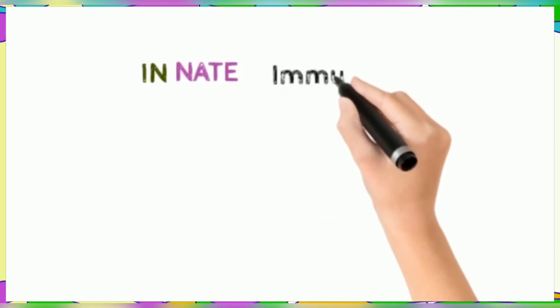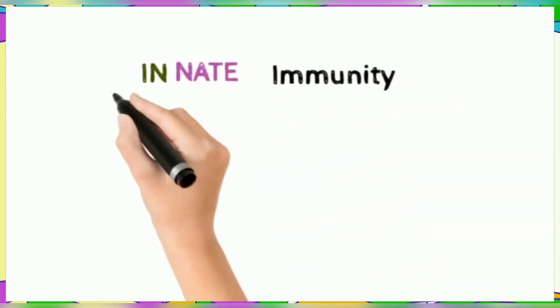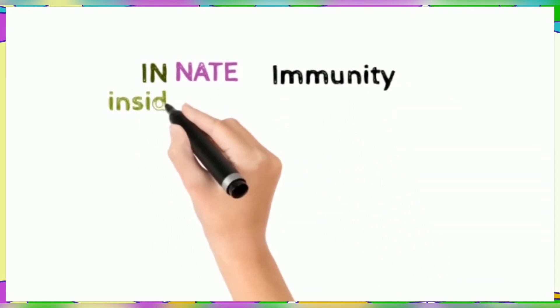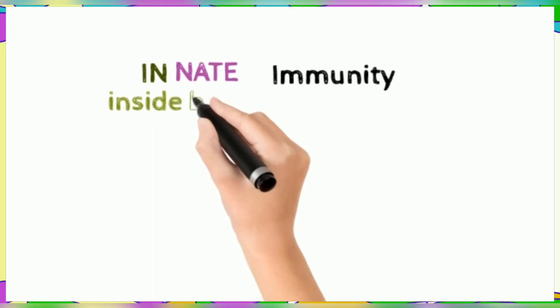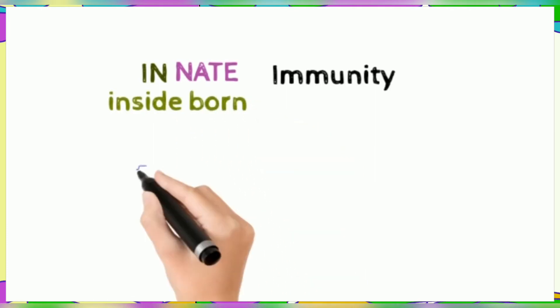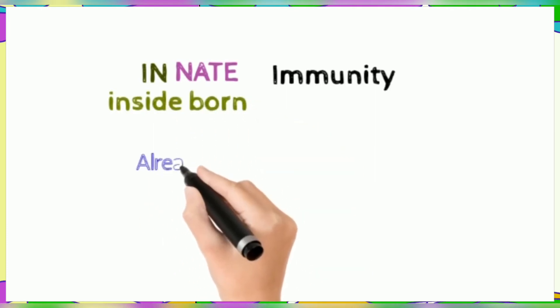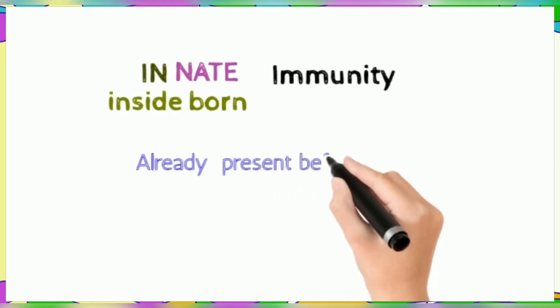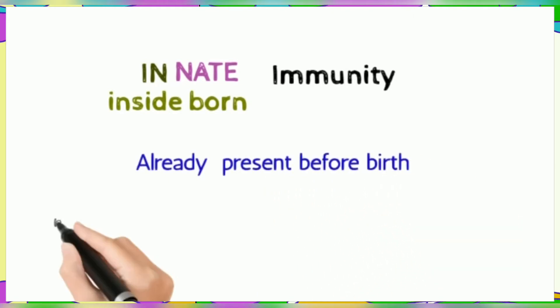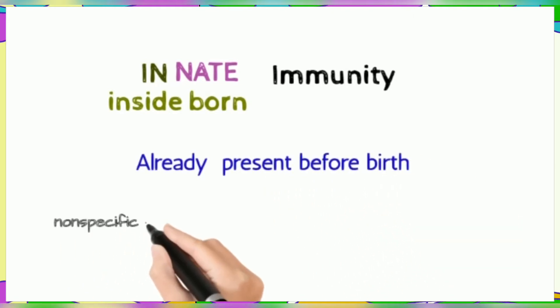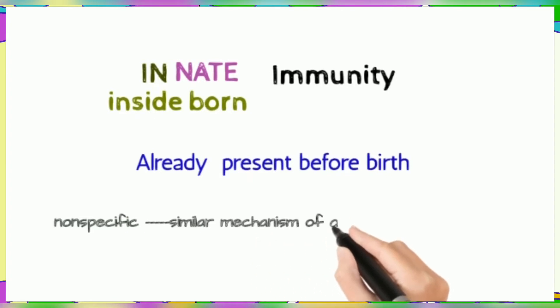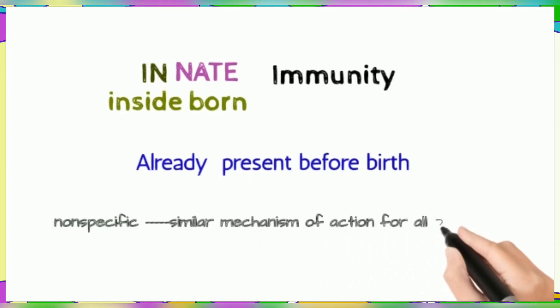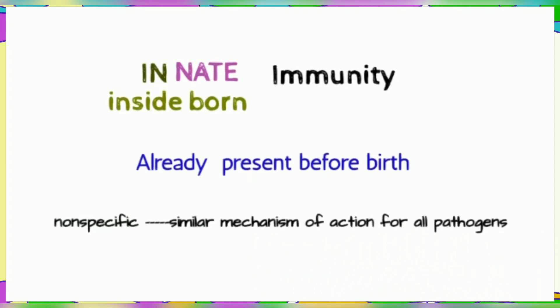Innate immunity is present from birth — already present before birth. It is non-specific in nature, meaning it uses a similar mechanism of action for all pathogens. We will now briefly cover the cells of innate immunity and the complementary system.